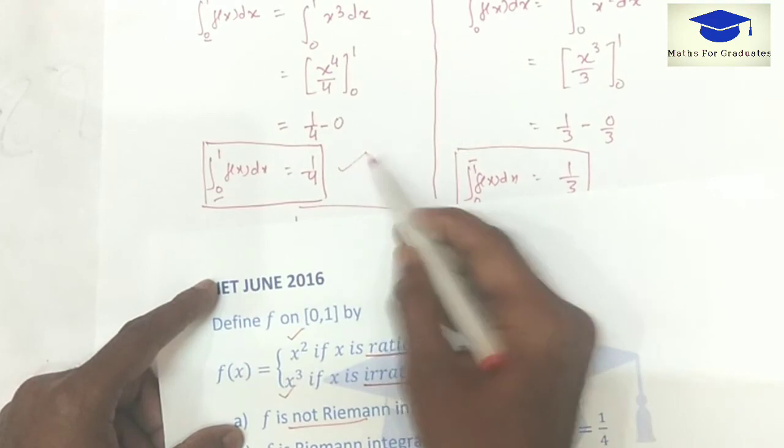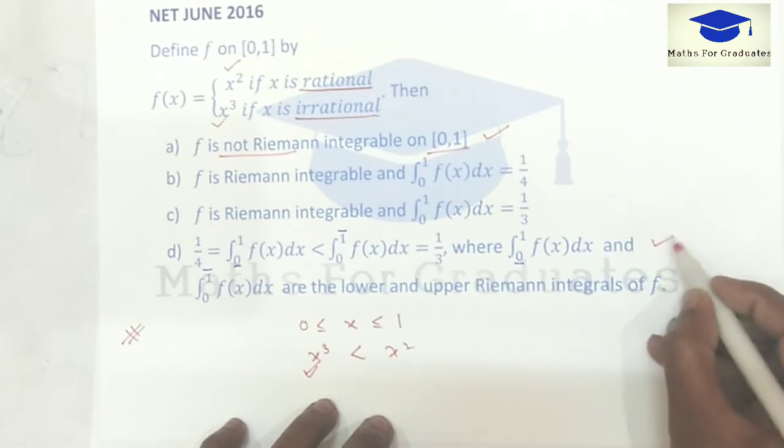Here the lower Riemann integral is 1 by 4 and the upper Riemann integral is 1 by 3. Therefore option D is also correct.